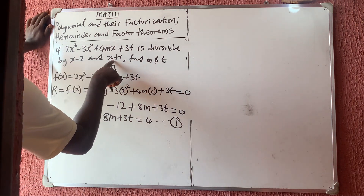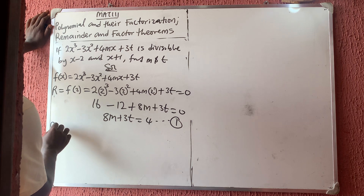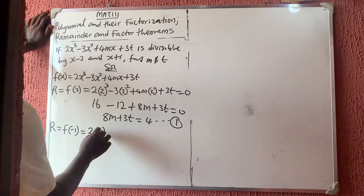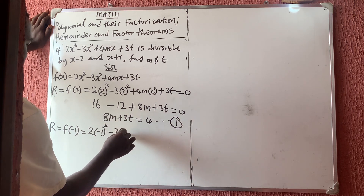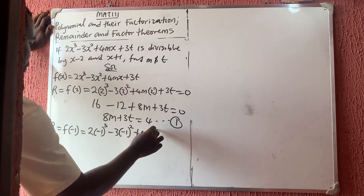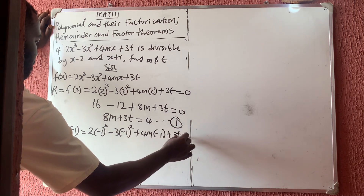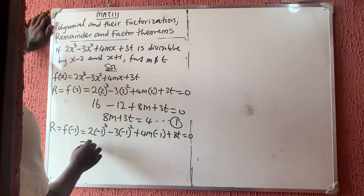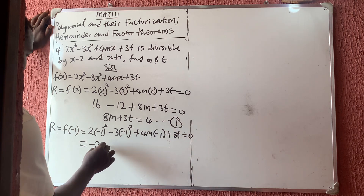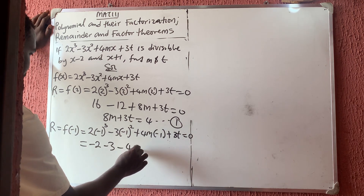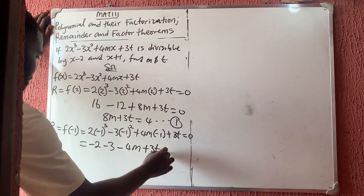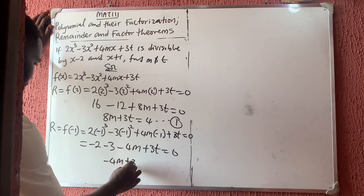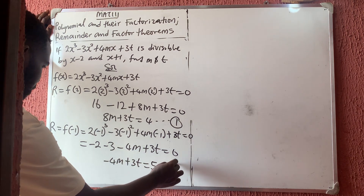For the other factor, x plus 1 gives x equals minus 1, so the remainder is f(minus 1): 2 times minus 1 cubed minus 3 times minus 1 squared plus 4m times minus 1 plus 3t equals zero. That gives minus 2 minus 3 minus 4m plus 3t equals zero.